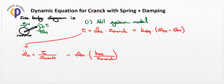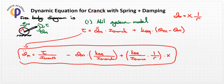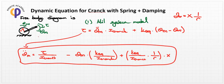Additionally, the theta_wheel value is substituted, where theta_wheel equals x divided by r (r being the wheel radius). This gives a term: plus k_equivalent times x divided by I_crank times (1/r) times x. This is the complete equation of motion for the crank dynamics.